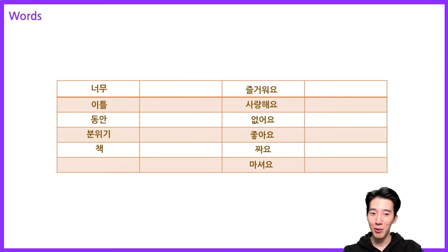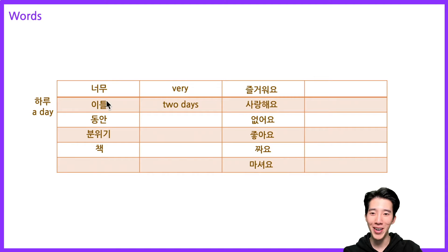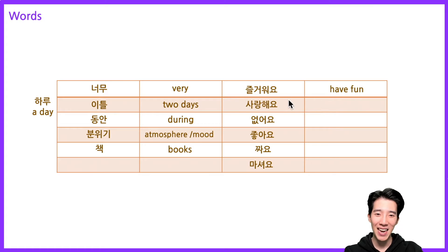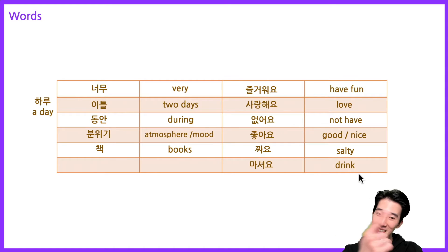So first one — can you read together? 너무 means 'very.' 이틀 is 'two days.' 하루 is 'a day.' 동안 means 'during' or 'during the time.' 분위기 means 'atmosphere' or 'mood.' 책 means 'books.' 즐거워요 means 'have fun.' 사랑해요 means 'love.' 없어요 means 'not have.' 좋아요 means 'good' or 'nice.' 짜요 means 'salty.' 마셔요 means 'to drink.'